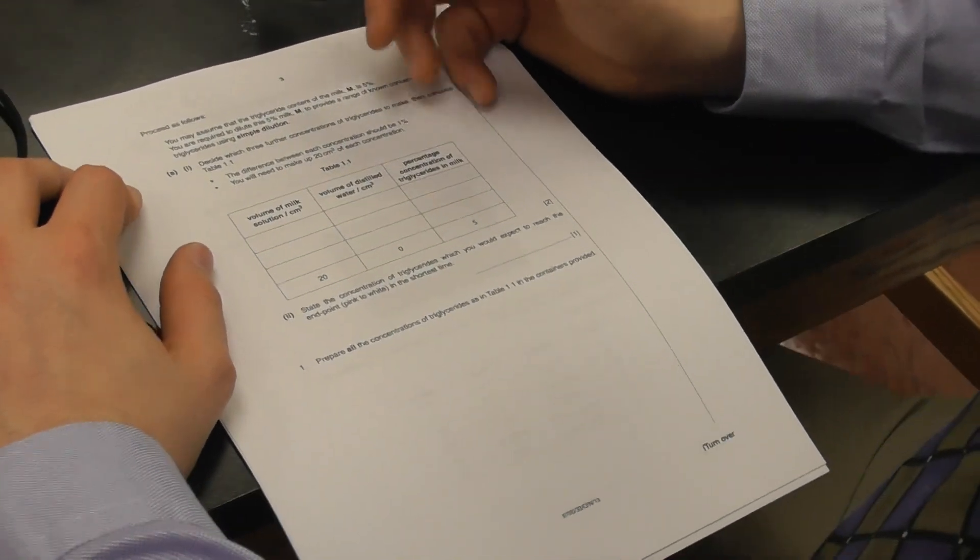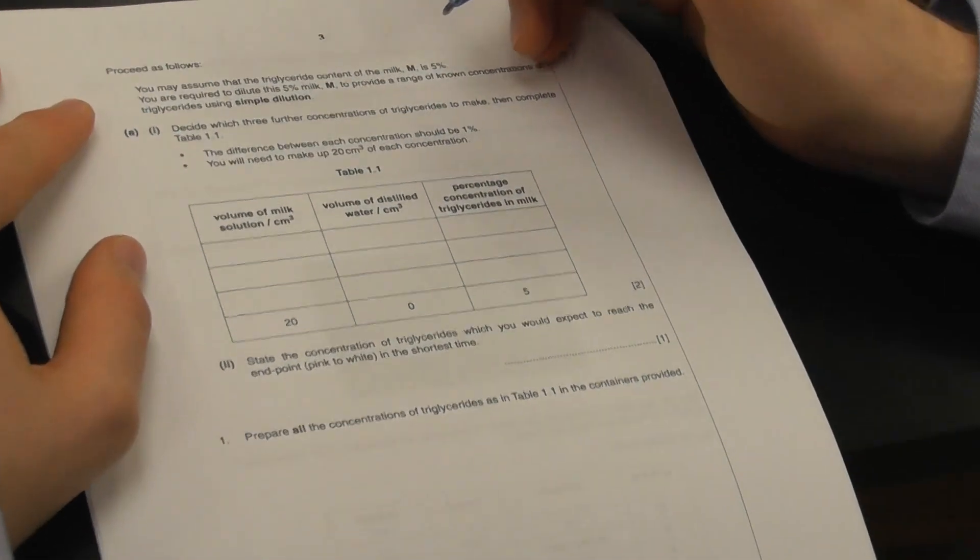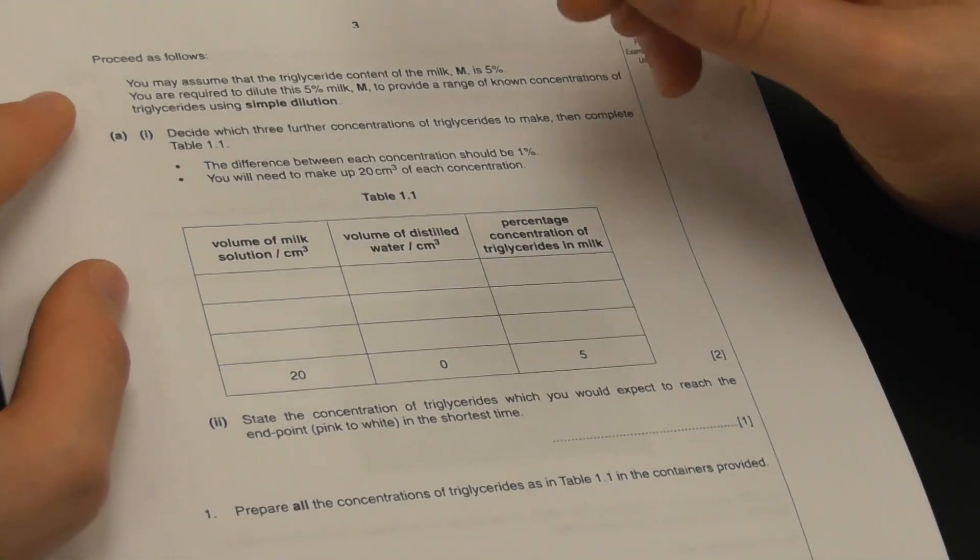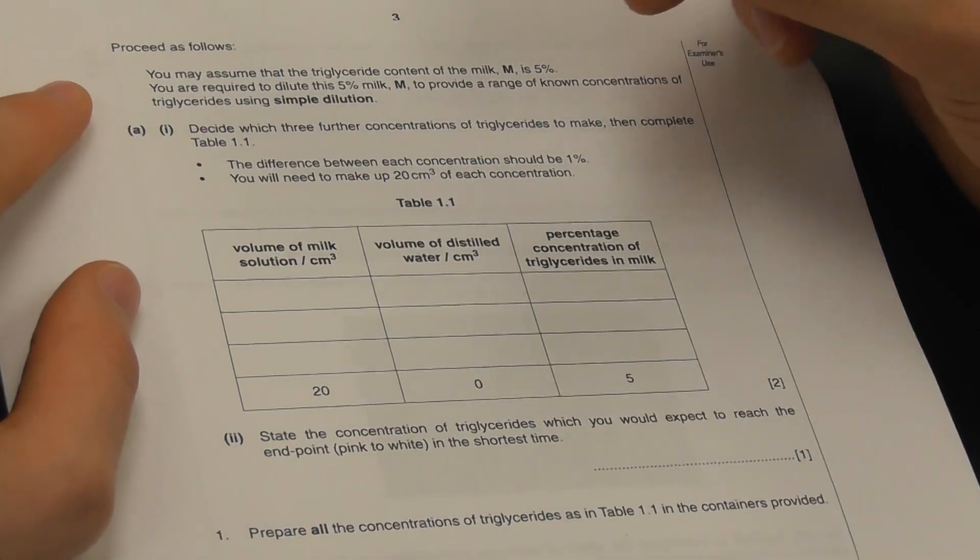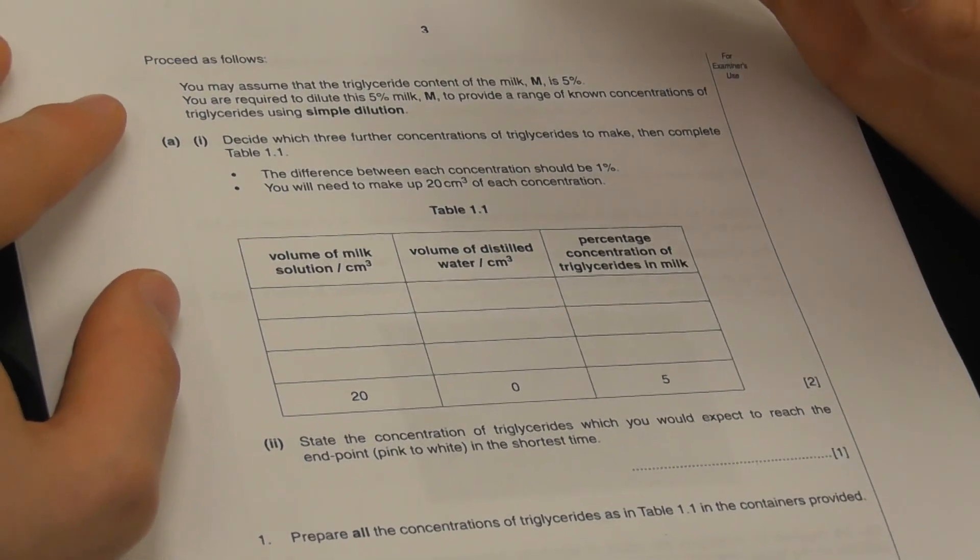We're going to assume that our triglyceride is going to be 5%, even though whole fat milk is not actually 5% triglycerides, but whatever, that's just reality. Reality has no place here.